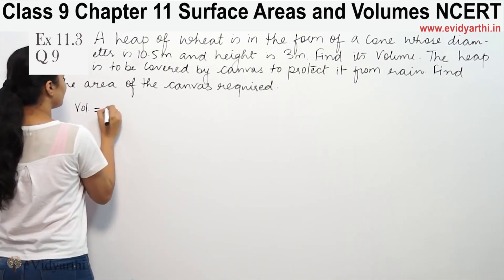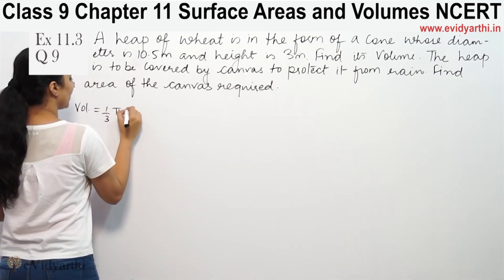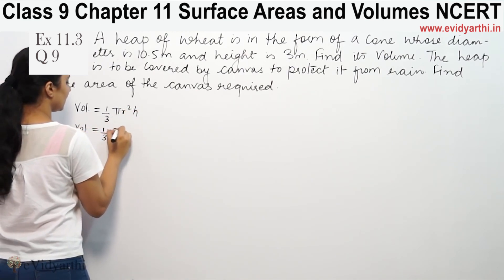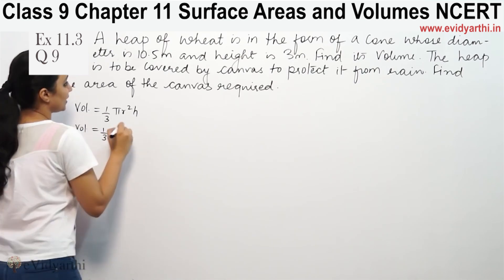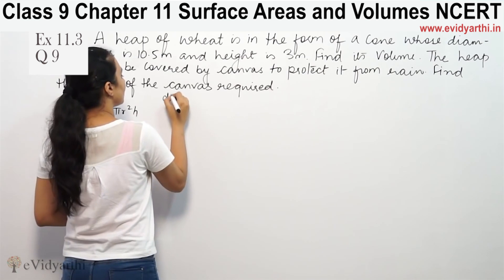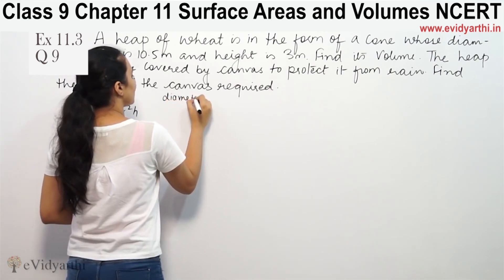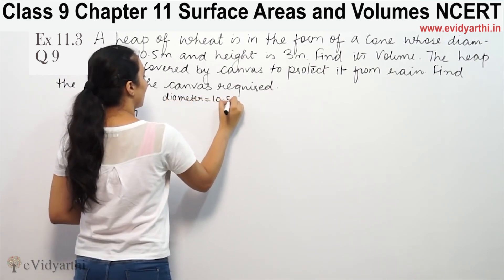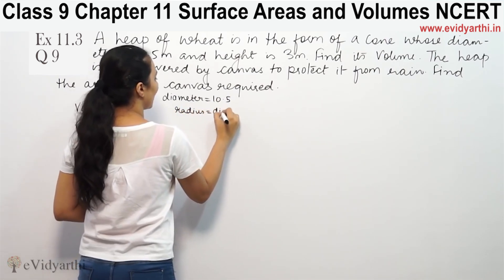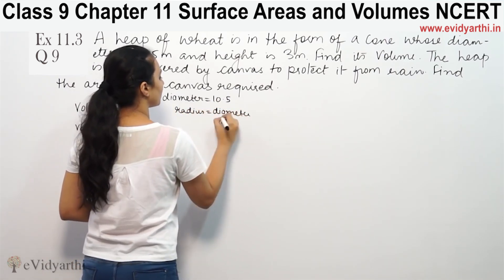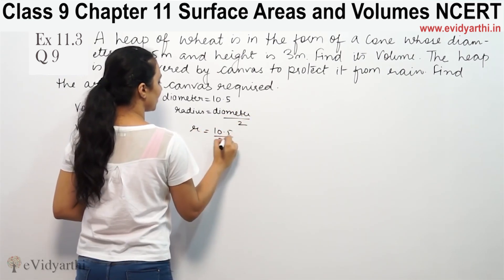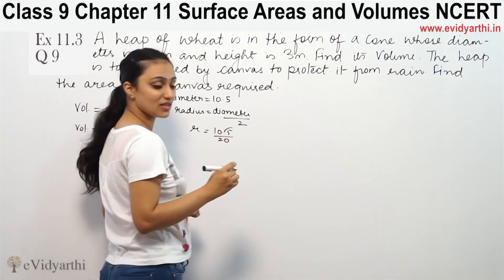The volume of a cone is 1/3 π r² h. So volume will be equal to 1/3 into π, whose value is 22/7, times radius. The diameter is 10.5, so radius will be equal to diameter by 2.